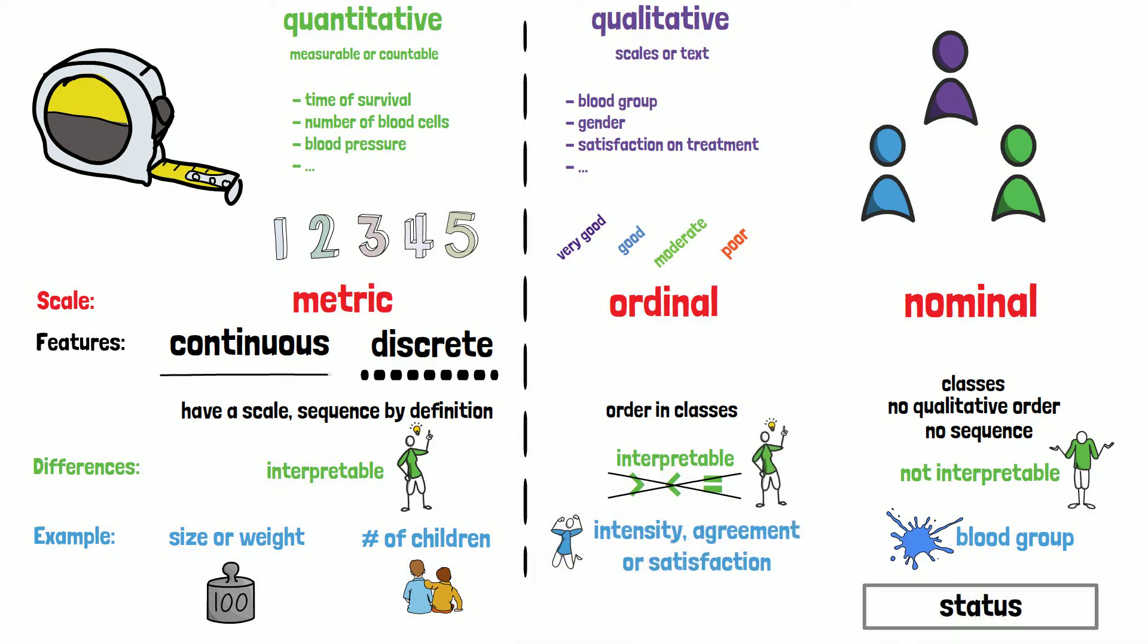So nominal variables are simply determining a certain status, whereas ordinal variables can be sorted and ordered.